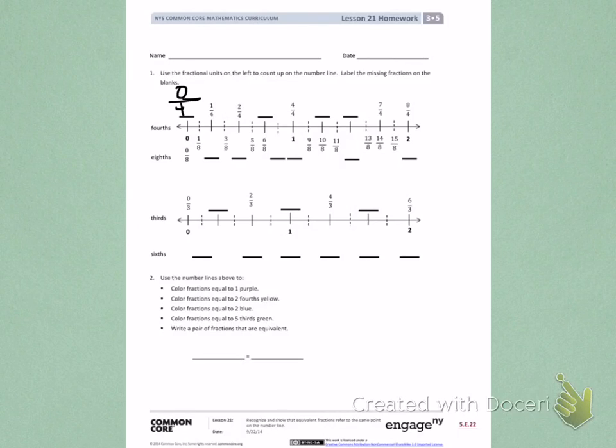Continuing to count on, 1 fourth, 2 fourths, 3 fourths, 4 fourths. I'm counting the solid lines, not the dotted lines. Then I have 5 fourths, 6 fourths, 7 fourths, 8 fourths.